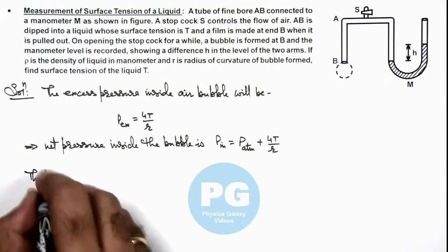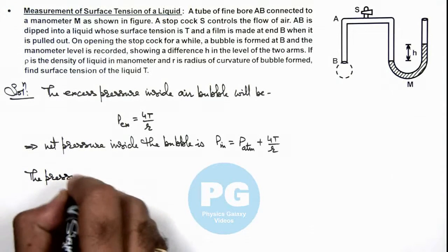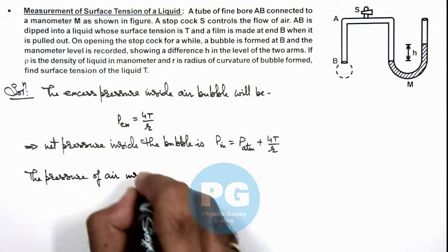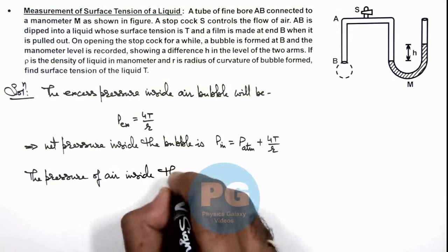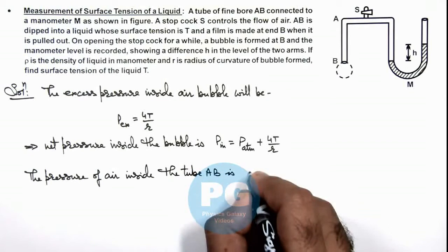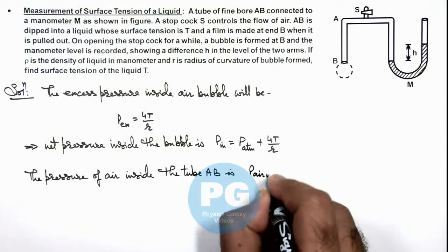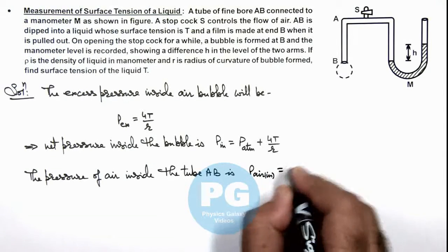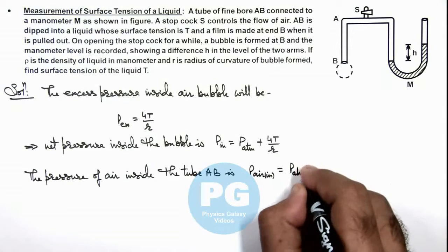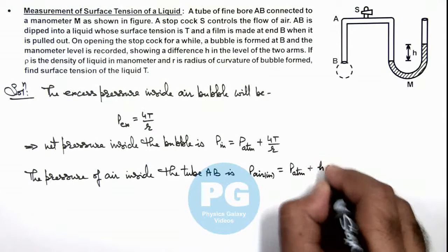The pressure of air inside the tube AB is, this pressure of air inside can be given as, from the other side we can write it as P atmospheric plus hρg.